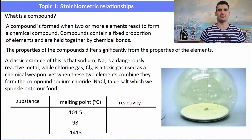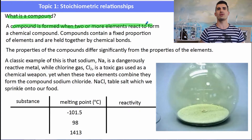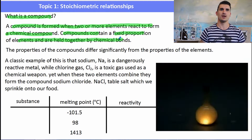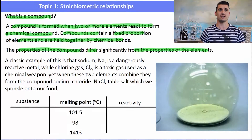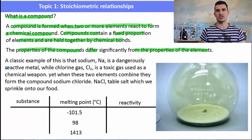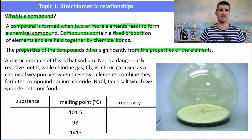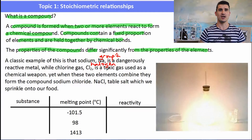So what is a compound? You need to know the definition. A compound is formed when two or more elements react to form a chemical compound. Compounds contain a fixed proportion of elements and are held together by chemical bonds. In topic four, we look at the different types of bonding: metallic, ionic, or covalent. The properties of the compound differ significantly from the properties of the elements. A great example is sodium chloride, which is table salt. It's made out of sodium, a group one metal that is highly reactive — it reacts with water and with air — and it's also made from chlorine gas, which is a very toxic gas that has been used as a chemical weapon in the past.